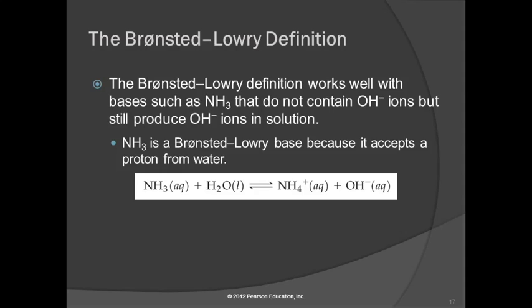Ammonia acts as a base, but it doesn't fit the Arrhenius definition. The formula for ammonia is NH3. When you put ammonia in water, it accepts a proton from the water and becomes ammonium ion, producing hydroxide ion in solution. Now we can understand how ammonia can act as a base even though it doesn't have OH in its formula — it has no oxygen in it at all.